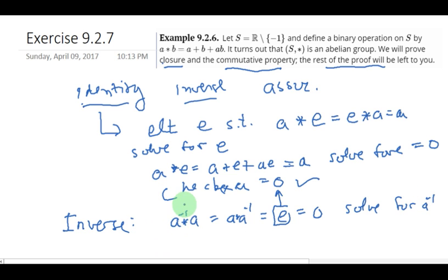A inverse star A or A star A inverse will be, let's go with A star A inverse. You can check that A inverse star A will work the same. And this is just going to be A plus A inverse plus A A inverse. Now, this is regular multiplication. Now, again, we already know that the identity is 0. So, in order to find A inverse, we simply need to set this equal to 0. And we solve for A inverse.